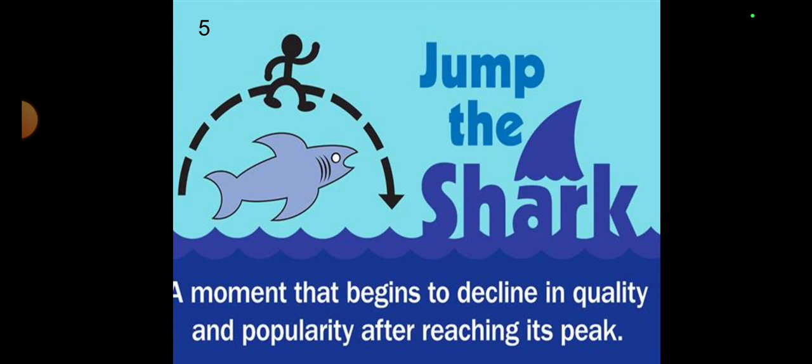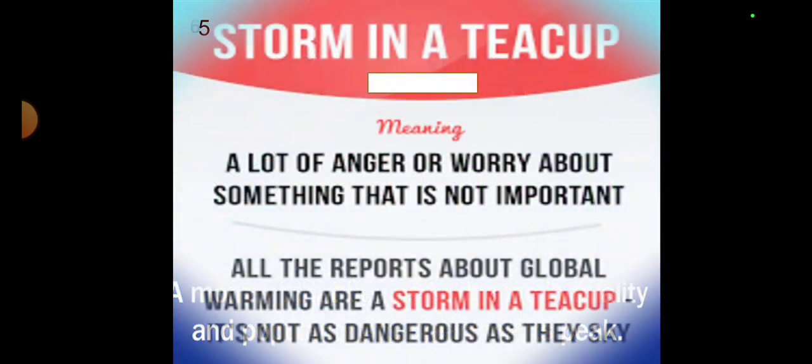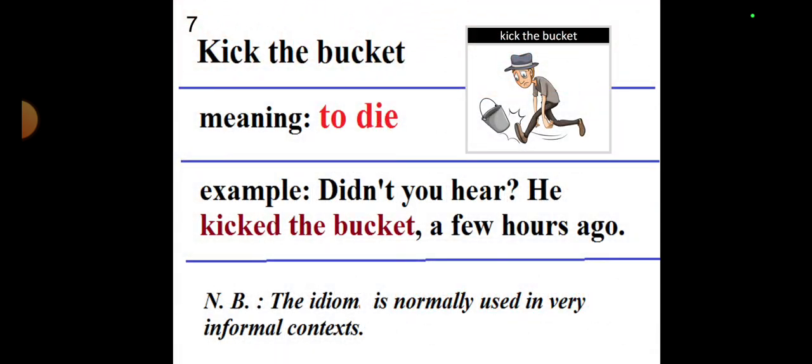Next one is storm in a teacup. Viewers, it is a sort of exaggerated state of, you can say, anger. Like the meaning is a lot of anger or worry about something that is not important. The sentence can be in this way: all the reports about global warming are a storm in a teacup, it's not as dangerous as they say.